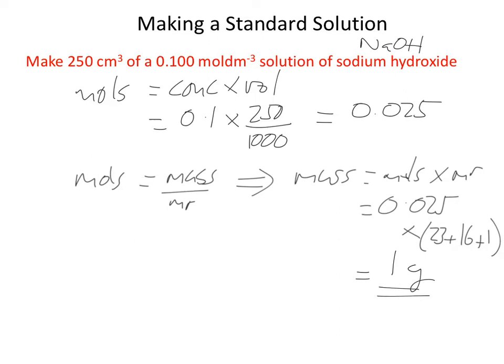So we need exactly 1 gram of sodium hydroxide in a solution which has a volume of 250 centimetre cubed. And if you did that bit correctly, that would be worth 2 of the 5 marks. So let's get on with the practical process.